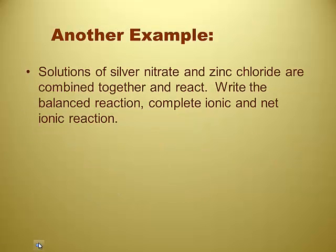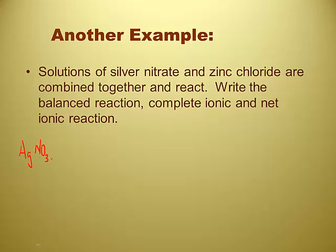Another example: take solutions of silver nitrate and zinc chloride and combine them. Silver nitrate should be aqueous. Zinc chloride — chlorides are soluble unless silver, mercury, and lead; zinc is neither, so ZnCl₂ is soluble and aqueous. This is going to form silver chloride — and that's insoluble, because silver is an exception to the chloride solubility rule. That's the precipitate. We've also got zinc nitrate — nitrates are all soluble with no exceptions, so that's aqueous. This is the molecular equation.